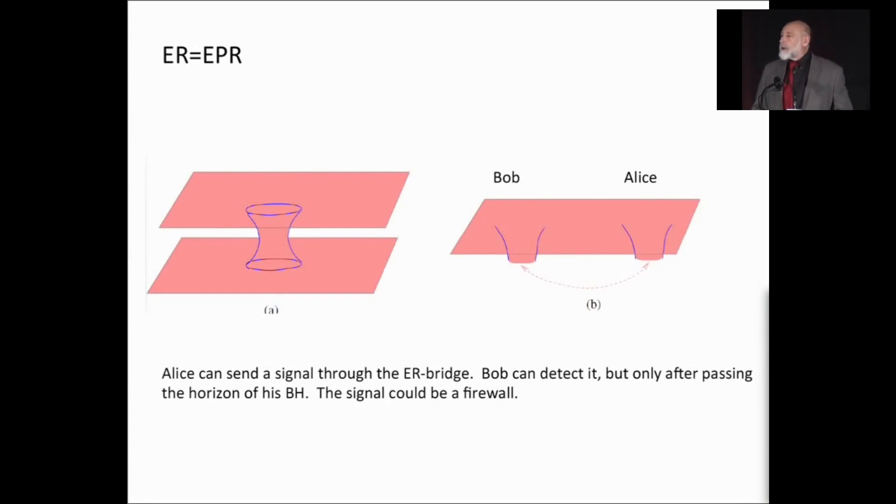So what is the essence of gravity? We all know the essence of gravity is geometry and how it changes with respect to sources and so forth. What is the essence of quantum mechanics? Well, I think a lot of people would say that the essence of quantum mechanics is entanglement. We've entered an era now where we're beginning to think that geometry and entanglement are very, very closely connected.